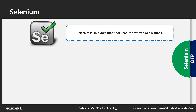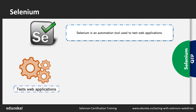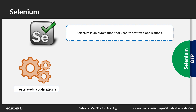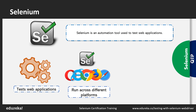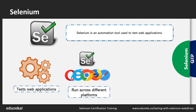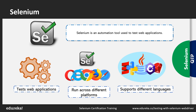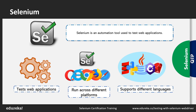Selenium is an automation tool used to test web applications. It is an open source portable framework that helps in automating web applications. It can be run across different browsers like Chrome, Safari, Opera, Firefox, and Explorer, and it also supports cross-browser testing, which helps in executing the process across multiple platforms simultaneously. Test scripts in Selenium can be written using any programming language like Java, Python, Ruby, C#, and so on, with Java being the most commonly used due to its user-friendly behavior.